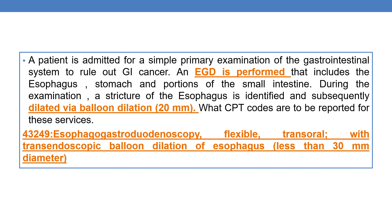Here, EGD is performed along with transendoscopic balloon dilation of less than 30 mm diameter. So the correct CPT is 43249: esophagogastroduodenoscopy, flexible, transoral, with transendoscopic balloon dilation of the esophagus that is less than 30 mm diameter.